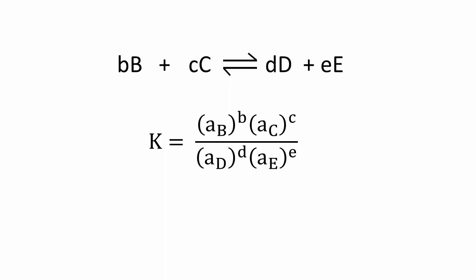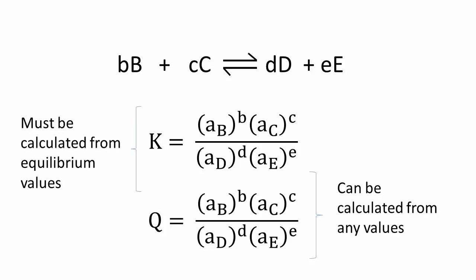As we saw in the previous chapter in thermodynamics, we had the reaction quotient Q that has the same mathematical expression as the equilibrium constant K. However, Q is calculable with any concentration or pressure, while K implies only the use of the equilibrium values.